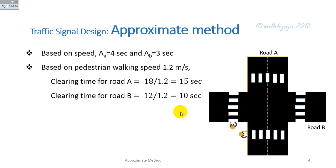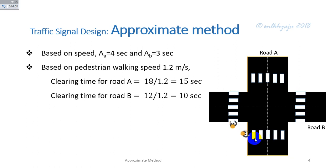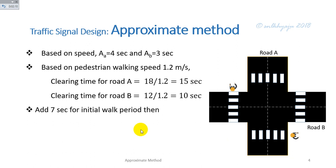To clear the road section of 18 meters considering a walking speed of 1.2 m/s, the total time taken is 15 seconds for Road A and 10 seconds for Road B. This is the clearing time: Road A takes 15 seconds and Road B takes 10 seconds. We then add 7 seconds for the initial walk period.